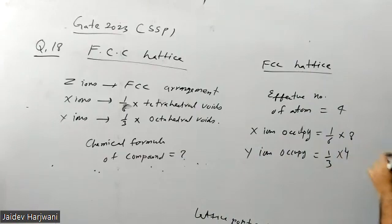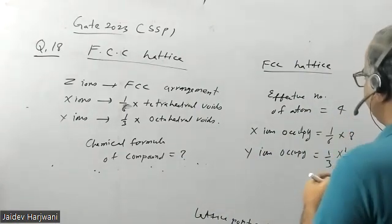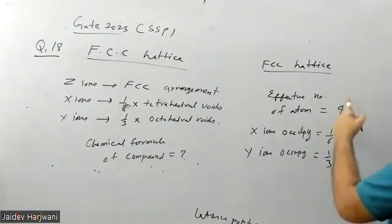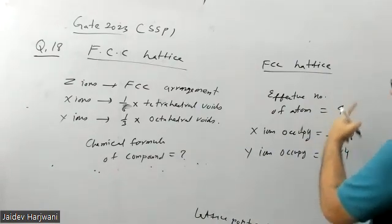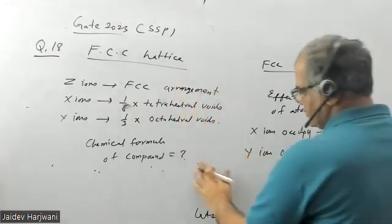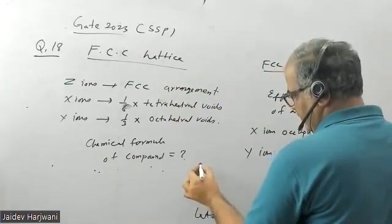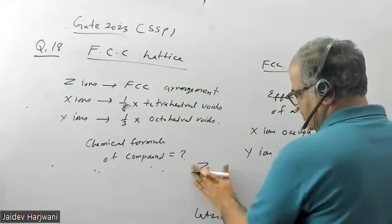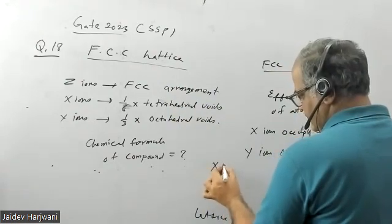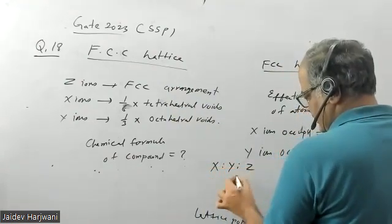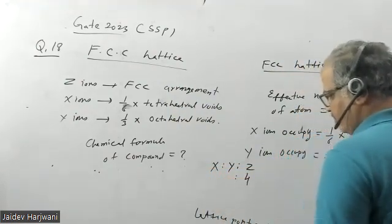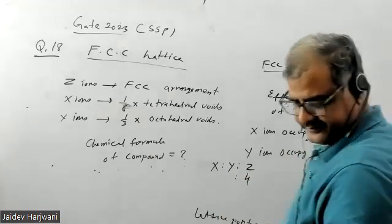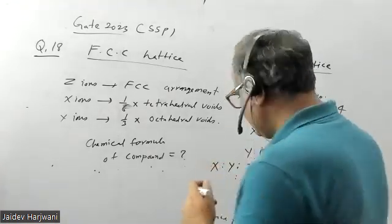So what will become? Now we have total number of Z atoms are 4. These lattice points will be occupied by Z ions. So the chemical formula what we can write is X, Y, Z. Z is 4.